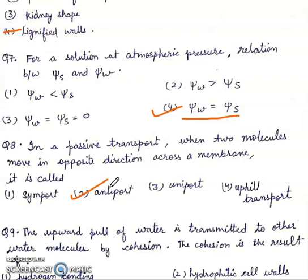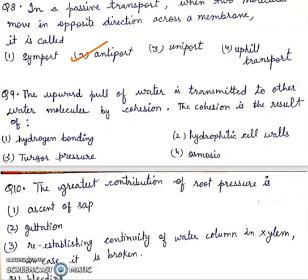Question 9: Upward pull of water is transmitted to other water molecules by cohesion. The cohesion is the result of: First, hydrogen bonding. Second, hydrophilic cell wall. Third, turgor pressure. Fourth, osmosis. Right answer will be first, hydrogen bonding.